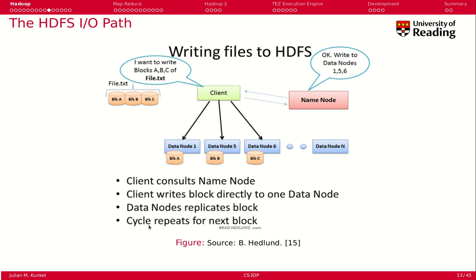How do we write data to HDFS? A client wanting to write 180 megabytes — which requires three blocks of up to 64 megabytes each — first contacts the namenode to request where to store three blocks. The namenode responds with data nodes 1, 5, and 6. The client then directly communicates with each data node: writing the first block to data node 1, the second block to data node 5, and the last block to data node 6. The data nodes then independently replicate the blocks.